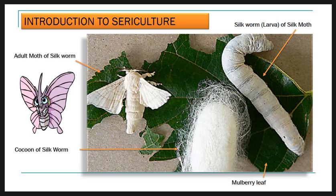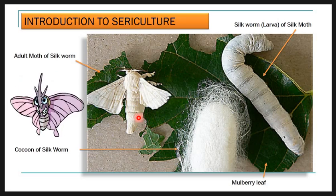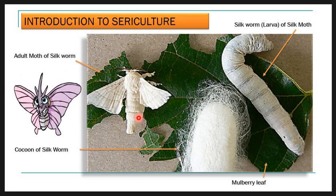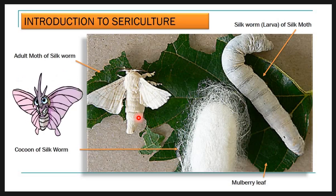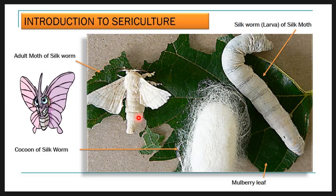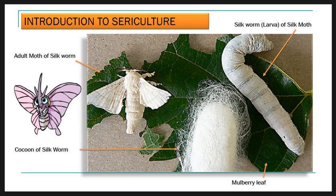In the cocoon, the pupal stage is seen. The cocoon is the inactive stage of the silkworm's life. Then we see the adult stage of silkworm, which is flightless. The main function of the adult silk moth is fertilization and egg-laying. This is the overview of the life stages of silkworm: adult, larvae, the cocoon, and mulberry leaves, which is the food of silkworm. The detailed life cycle we will see in the next lecture.